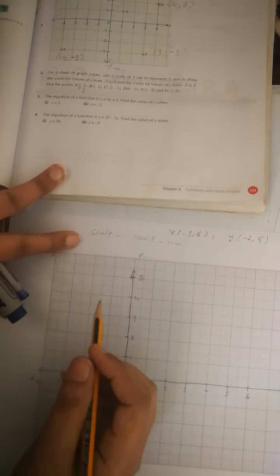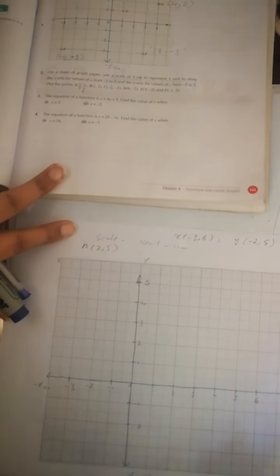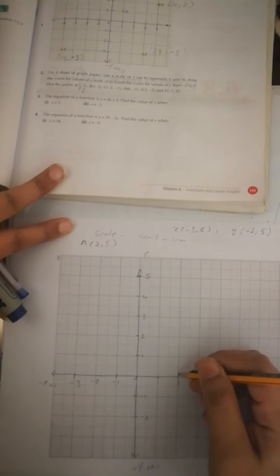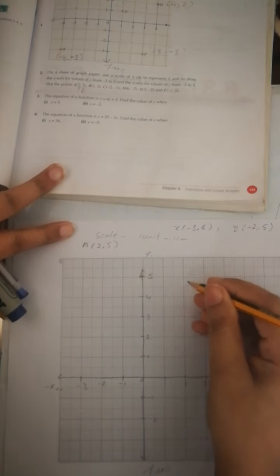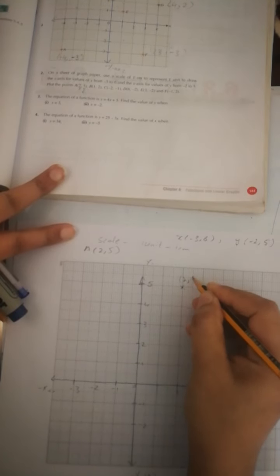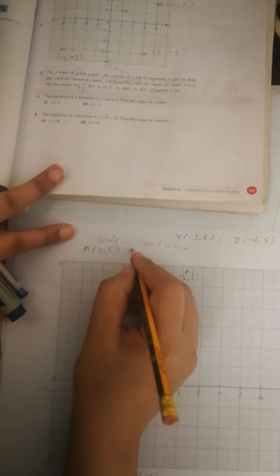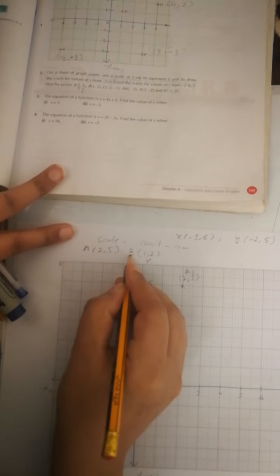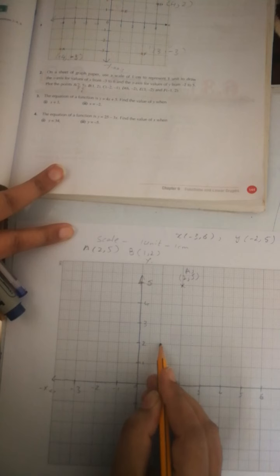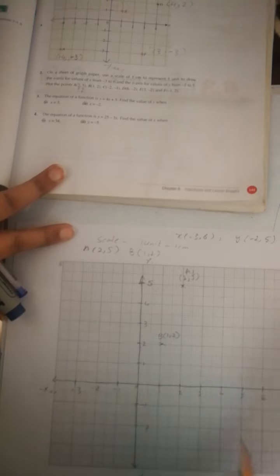Now we take the points. A is (2, 5), meaning x is 2 and y is 5. Where x is 2, take your pencil up until you get y equal to 5 — this is point A. The next point is B at (1, 2), meaning x is 1 and y is 2. X is 1 here, take it up — y is 2. So this is point B.